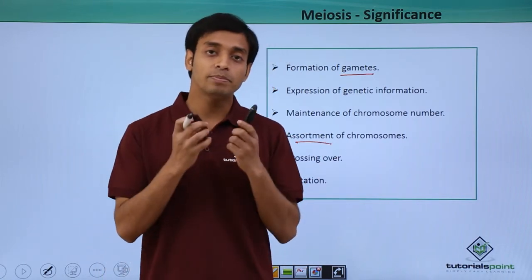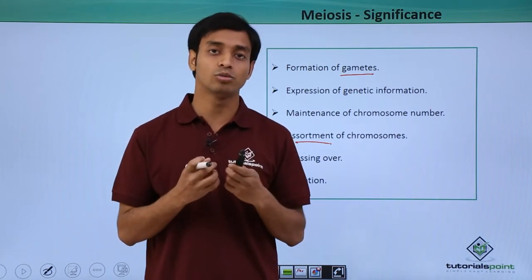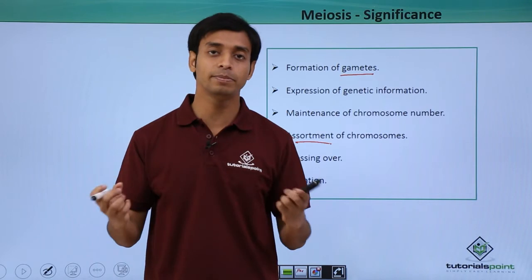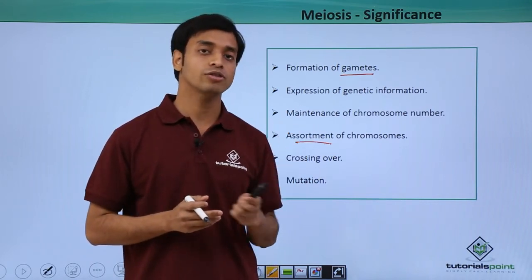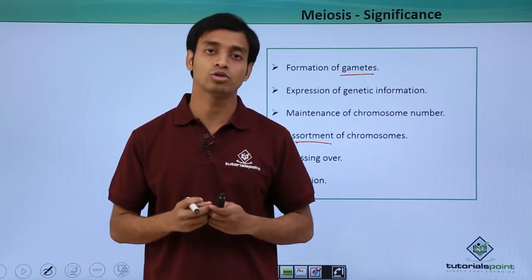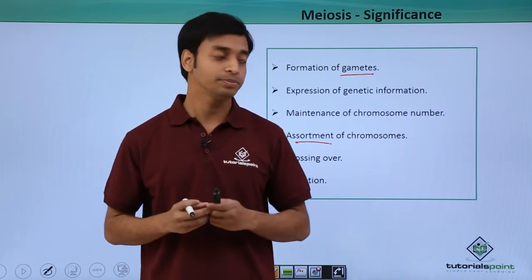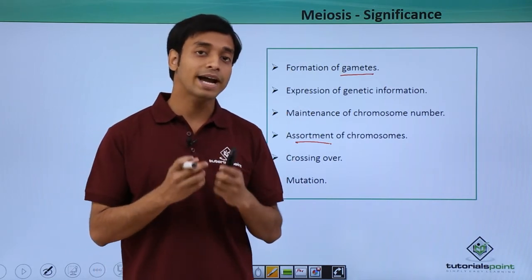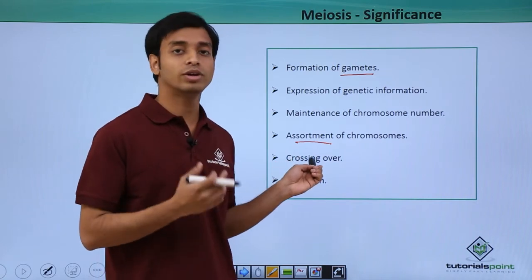Meiosis also helps in the assortment of chromosomes, which means the paternal and maternal chromosomes are segregated or assorted independently of each other. This is only possible because of the process of meiosis; otherwise the paternal and maternal chromosomes would not assort independently.